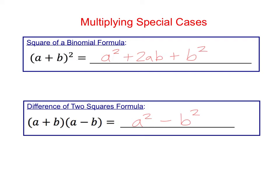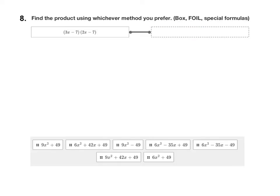These two formulas you can use for special cases, but remember you can also use just the box method or FOIL method — you'll get the same answer either way. Number eight is a matching question, and there are three different problems that we're going to solve. You can find the product using whichever method you prefer: the box method, the FOIL method, or those special formulas that we just talked about.